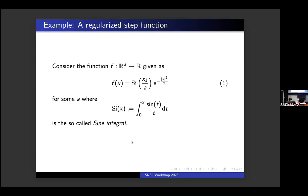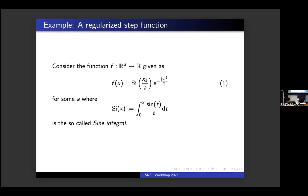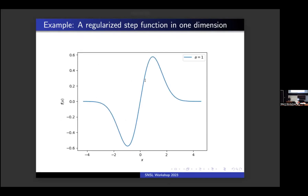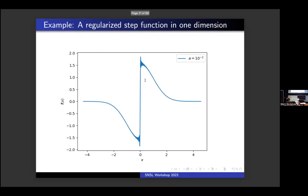Let's look at some examples. Suppose F is given by a sine integral expression. The sine integral Si is defined as the integral of sin(t)/t dt. We take the sine integral of the first component of x divided by some constant a, multiplied by a Gaussian. The Gaussian makes it decay in all directions, while the first component has what we call a regularized discontinuity. The parameter a defines how steep it is. As a decreases from 1 to 10^{-1} to 10^{-2}, the function becomes steeper and more like a true discontinuous function.